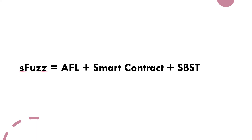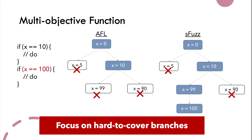Sfuzz++ is the combination of AFL, smart contract fuzzing, and SBST. SBST stands for search-based software testing, which refers to the methods we use to construct the multi-objective function. The multi-objective function is lightweight because we only keep one input per uncovered branch. In practice, we handle 10 to 50 uncovered branches at a time.